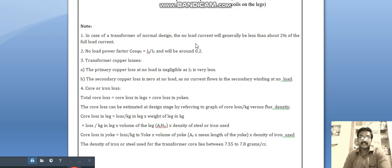Core or iron loss: The total core loss is equal to core loss in legs plus core loss in yokes. The core loss can be estimated at design stage by referring to graph of core loss per kg versus flux density.